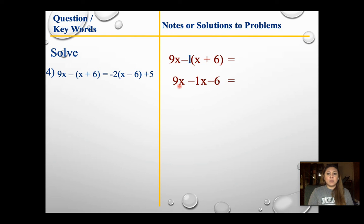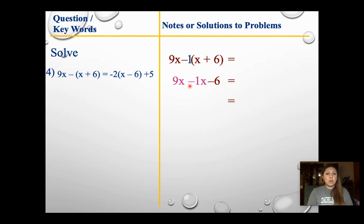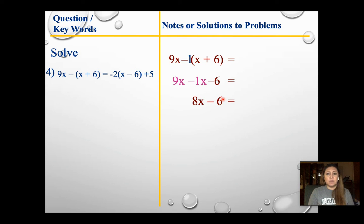Can I combine anything? Yes — I have two x's. 9x minus 1x gives me 8x. Bring down that negative 6. Can I combine negative 6 with 8x? No, because negative 6 doesn't have an x, so I just leave it.